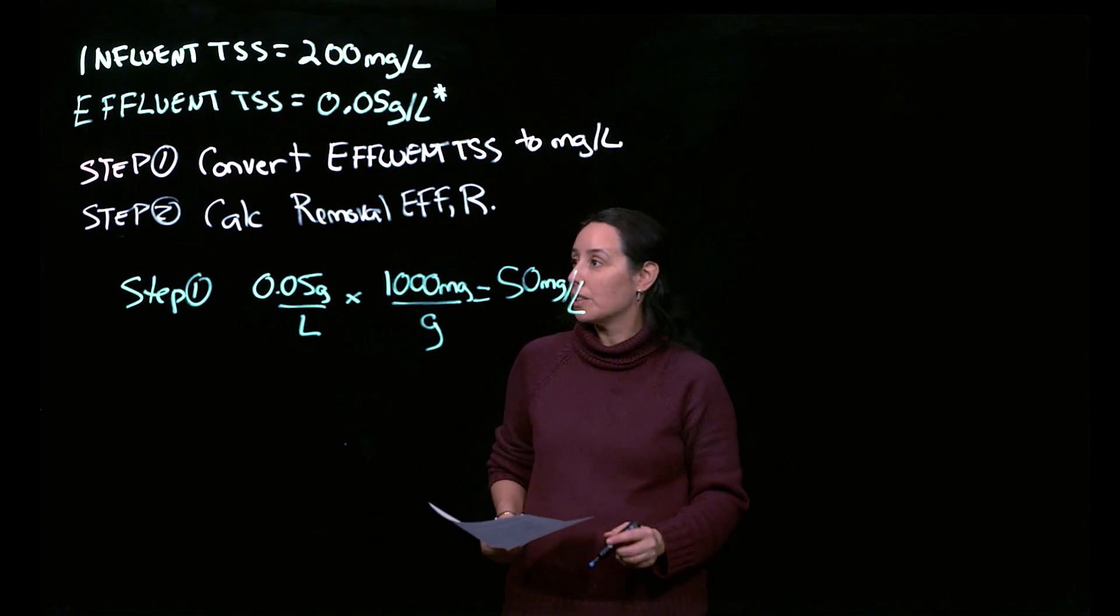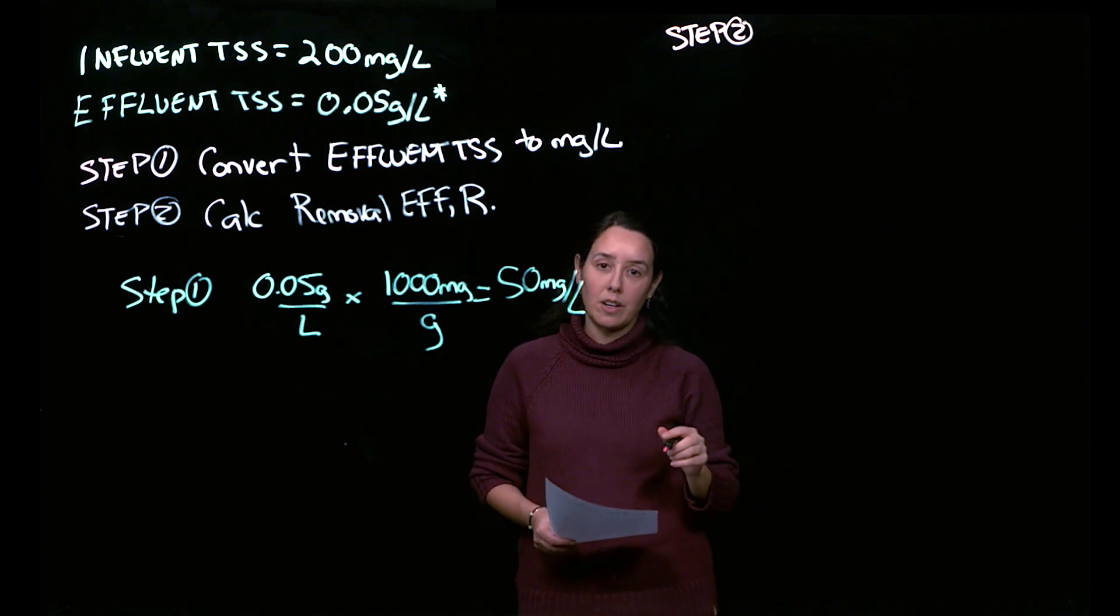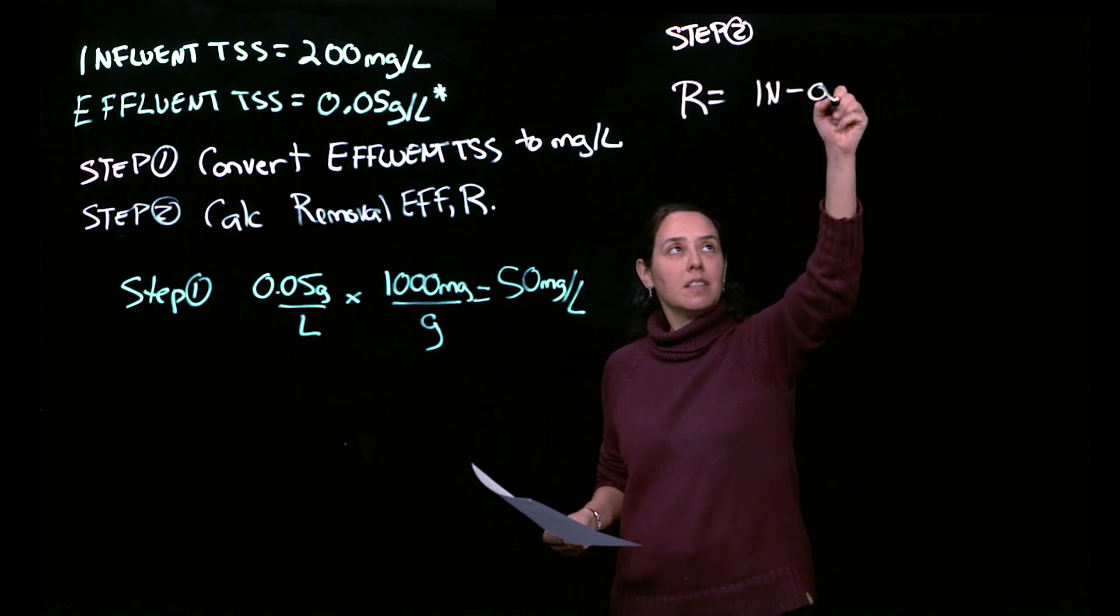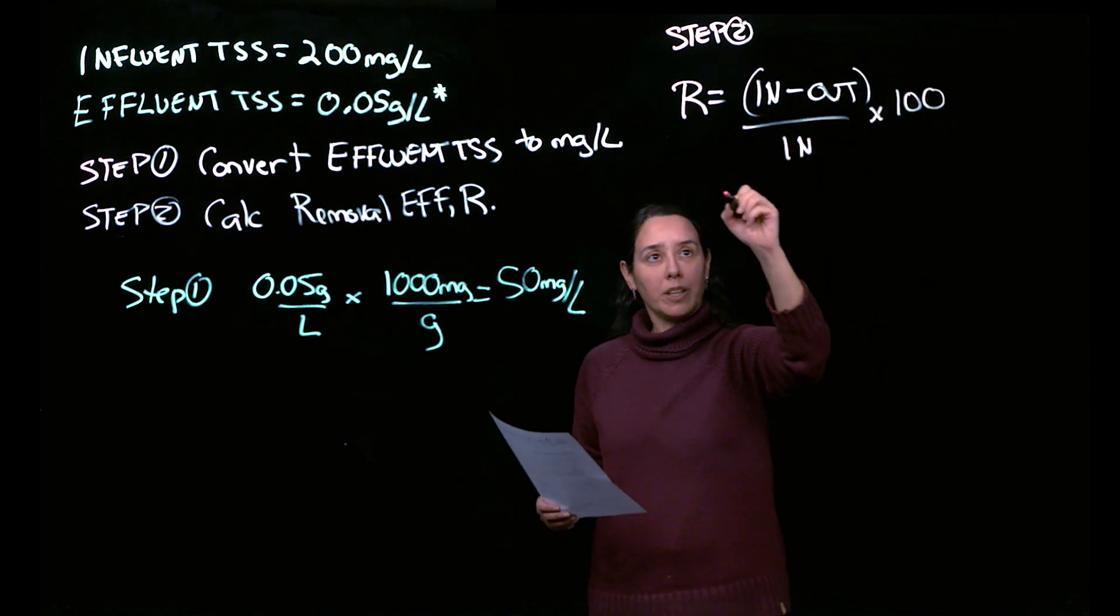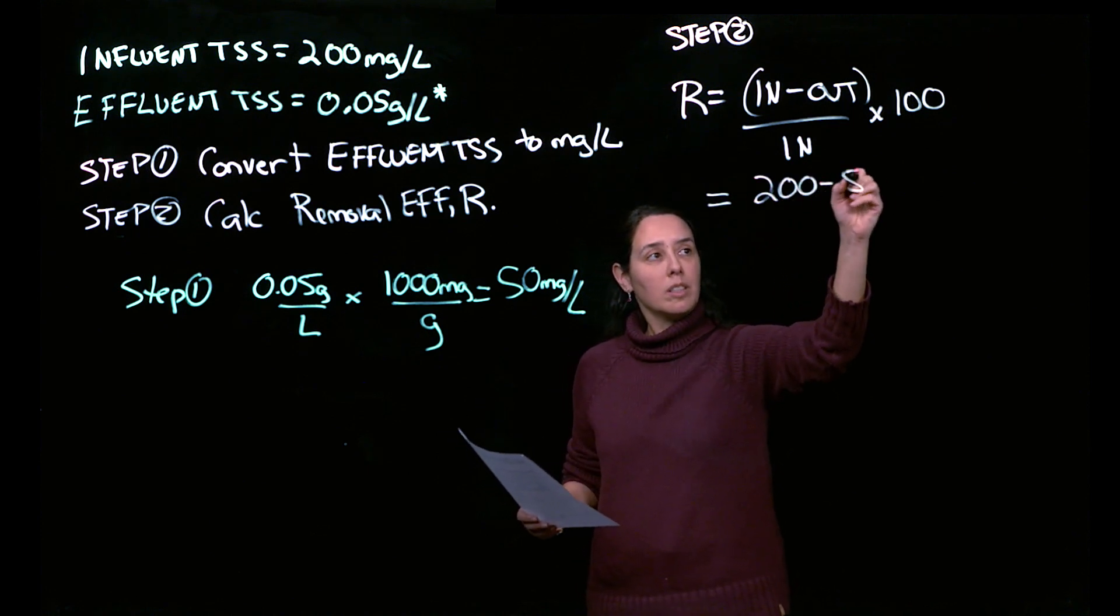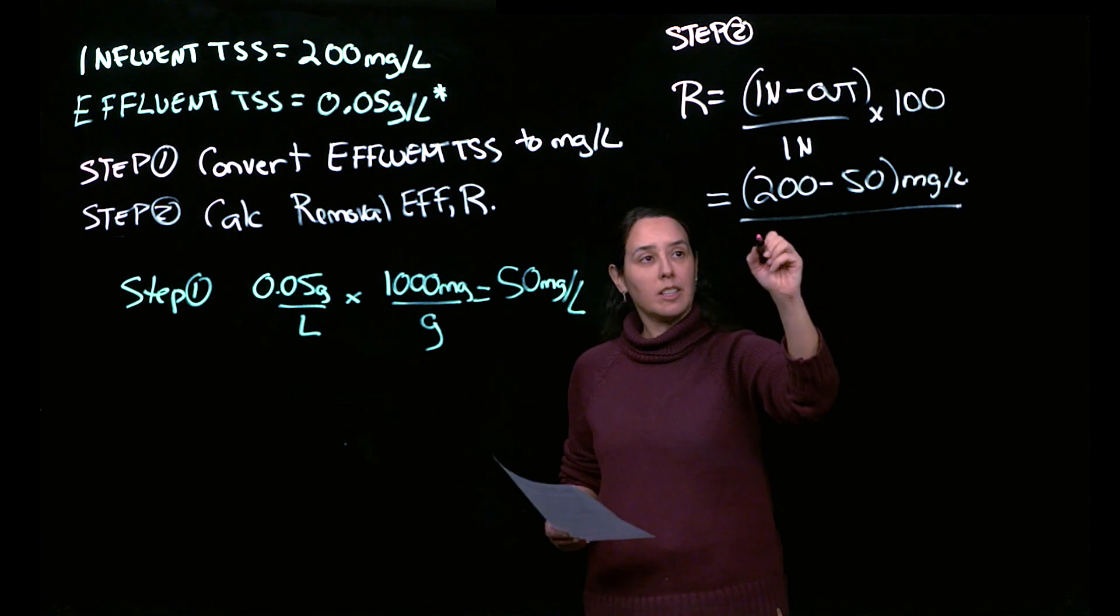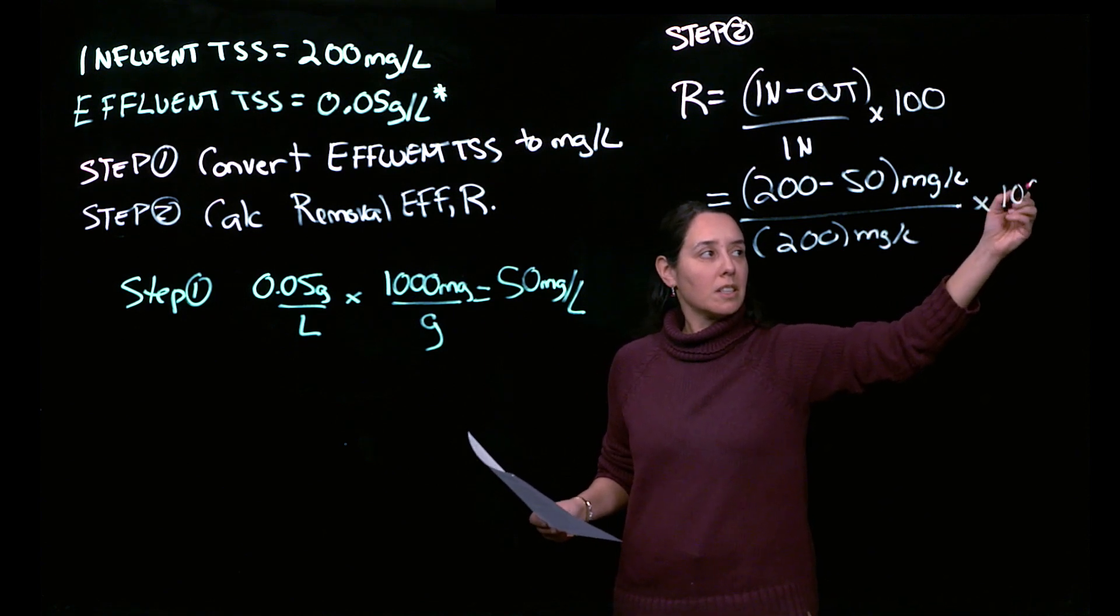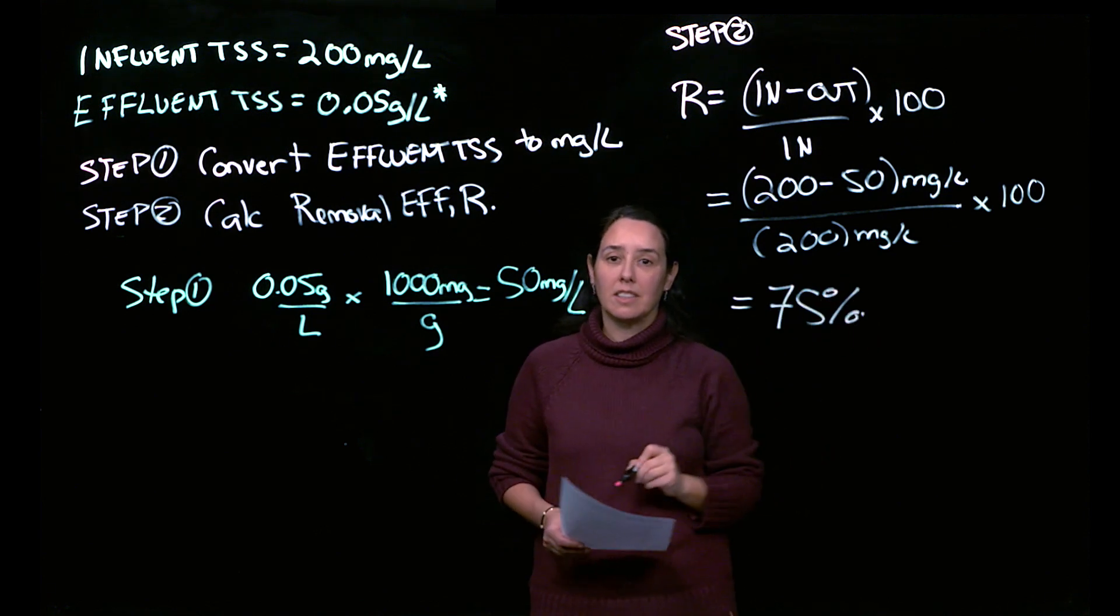So then we can go right on to step two here. So now we're just going to calculate that R value, the removal efficiency. Just remember that R is in minus out over in times 100. So we have this as 200 minus 50, and these are all in milligrams per liter divided by 200 milligrams per liter times 100. And we will get 75%.